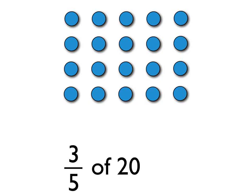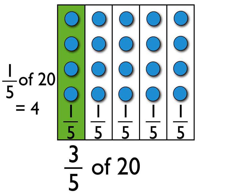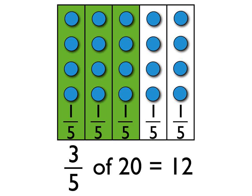Another example now. We're going to look at what three-fifths of 20 is. If we're working in fifths, we need to take the 20 and divide it into five equal groups. Twenty divided by five is four, so you can see there are four blue dots in each group. There are five groups, and each group is one-fifth of 20. So, one-fifth of 20 is four. But we don't want one-fifth of 20, we want three-fifths of 20. So, three-fifths of 20 is three times four, which is 12.